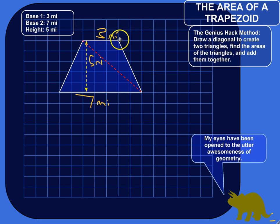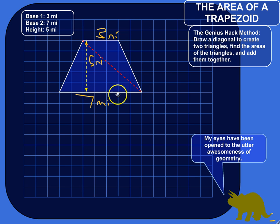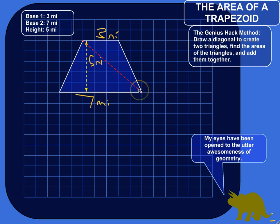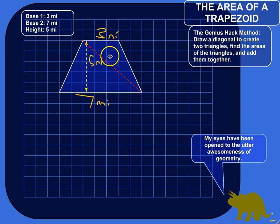What you do is connect two non-adjacent vertices. The vertices are where the sides of the trapezoid meet — there, there, there, and there. Adjacent means the next one over. So if I look at this vertex, the next one in each direction is adjacent to it. To draw a diagonal, I connect this vertex to a non-adjacent vertex on the other side, and I've now cut this trapezoid into two triangles.